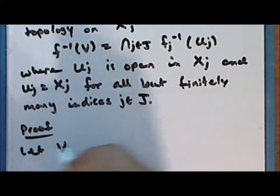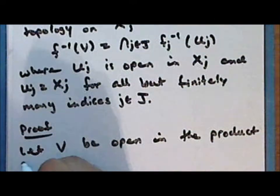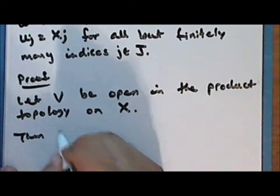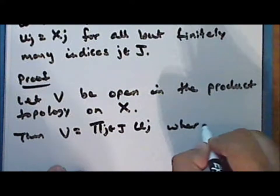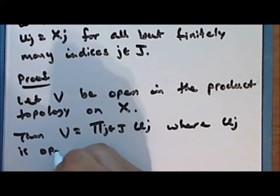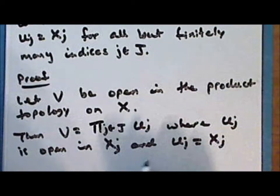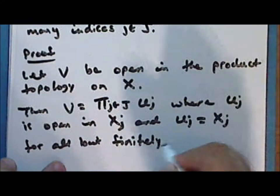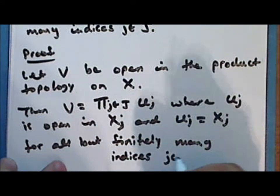Proof. Let V be open in the product topology on X. Then V is a product of some sets u_j, where u_j is open in the factor space x_j, and in fact u_j equals the entire factor space x_j for all but finitely many indices j in the indexing set J.